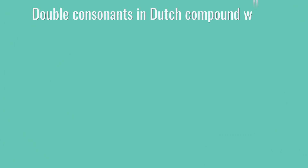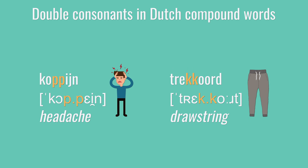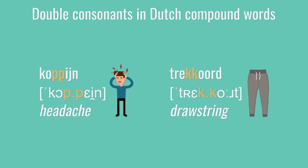One final rule regarding consonants is the observation of double consonants, specifically the ones that show up in compound words. Generally, Dutch doesn't have double consonants, but compound words are an exception. There are some Dutch compound words where the first word ends in a consonant, like kopijn (headache), which is composed of kop (head) and pijn (pain), and the second word starts with the same consonant. There you really will hear a bit of a double consonant where you stop for a second on the p sound. It's kopijn rather than kopijn. And you hear the same thing in trekkoord. We'll mark this in IPA by writing the consonant twice, separated by a period.